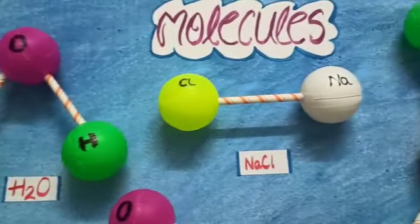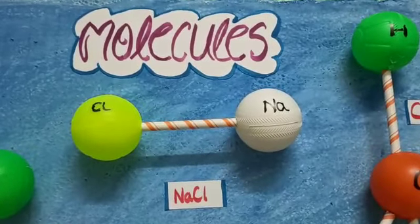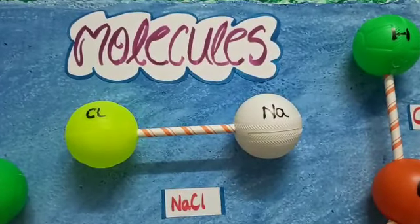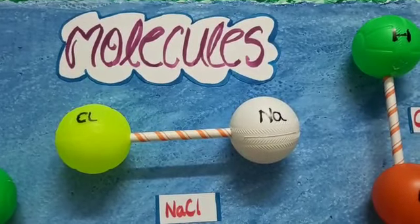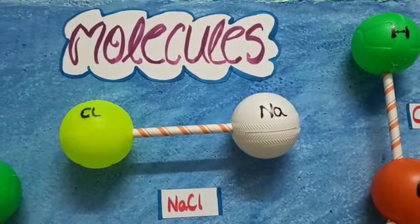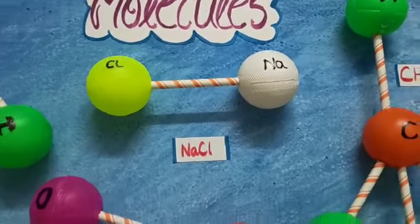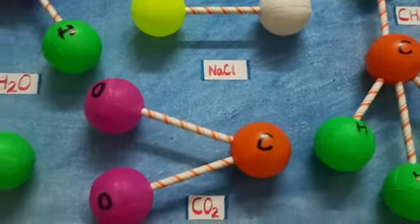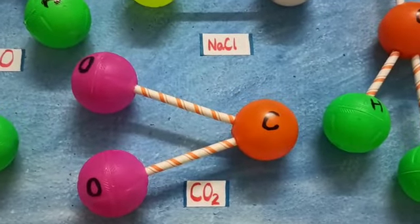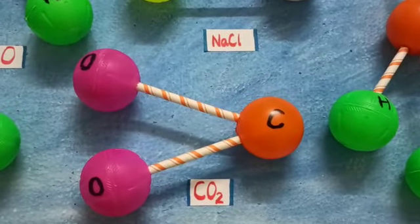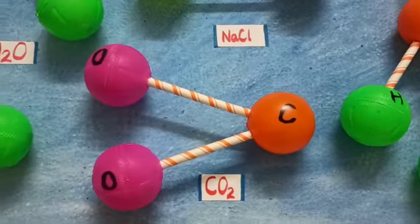One atom of sodium and one atom of chlorine combine to form sodium chloride, also known as common salt. Two atoms of oxygen and one atom of carbon combine to form carbon dioxide, which is a gas.